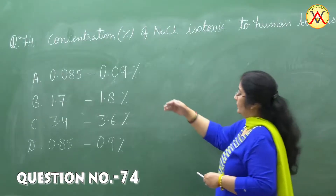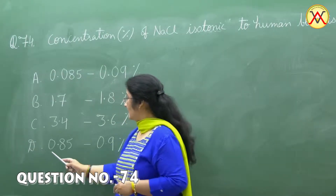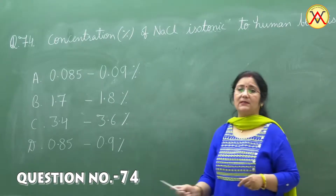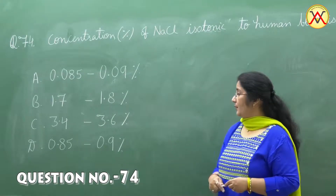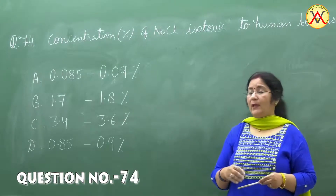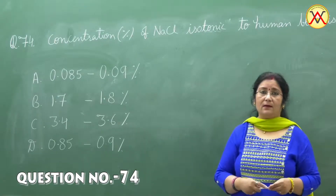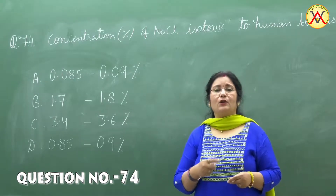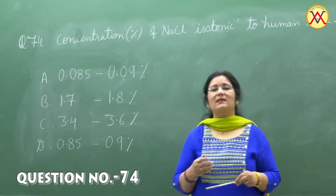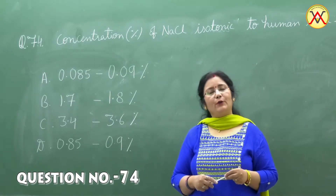After going through all the options, option D — that is 0.85 to 0.9 percent — is the most correct answer, because it is near the correct range. As we are aware, approximately 0.9 percent NaCl solution is isotonic to human blood plasma, and this concentration is required to maintain the volume of human blood.